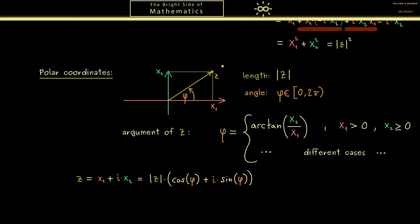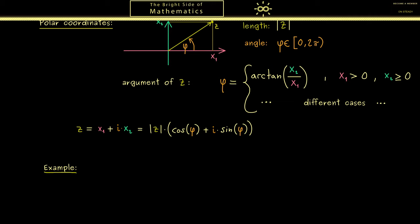Now to close this video let's look at an example. So here let's simply start with a complex number z. So maybe let's take it as 3 plus 3i.